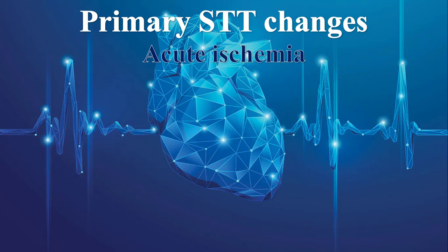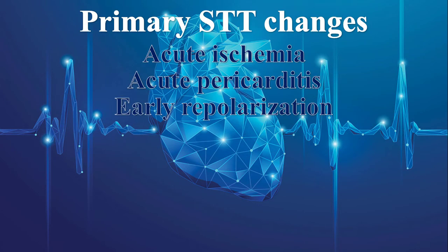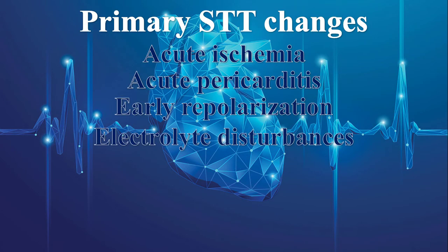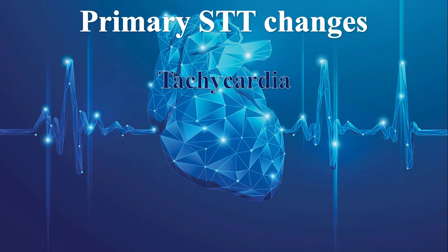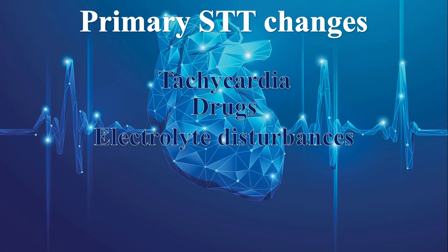Acute ischemia, acute pericarditis, early repolarization, and electrolyte disturbances like hyperkalemia or hypercalcemia can cause primary ST elevations. On the other hand, any kind of tachycardia or tachyarrhythmia, drug effects including digoxin effect, and electrolyte disturbances like hypokalemia or hypocalcemia are main causes of primary ST depression.